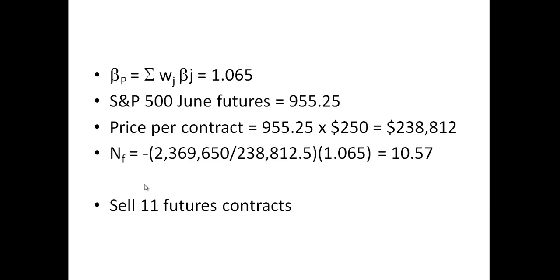So if you had a beta equal to two, you'd be using close to 20 contracts. If you had a beta of one and a half, you'd be using somewhere around 15. You adjust the number of contracts based on beta — just like in the short-term interest rate hedge, where we adjusted the number of contracts based on the ratio of the two durations, which told us the interest rate sensitivities.